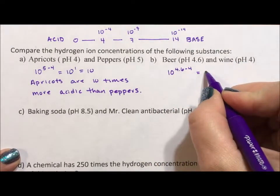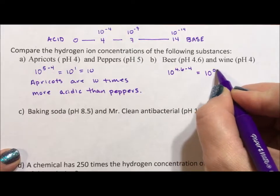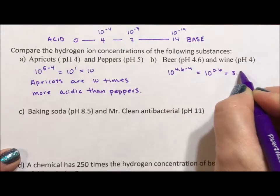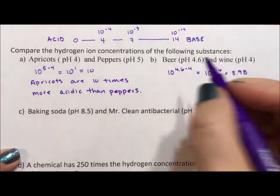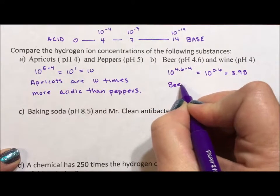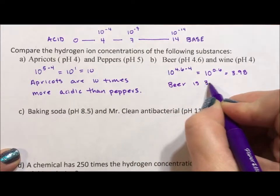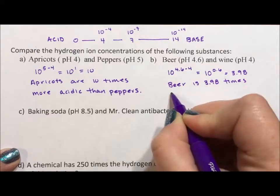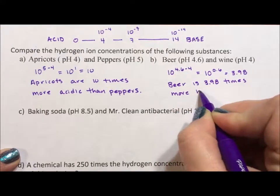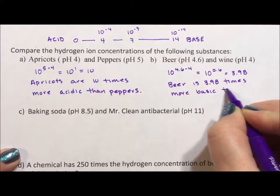So comparing beer and wine I'm going to end up with 10 to the 0.6 which is 3.98 and so I can say because that number is larger closer to 14, beer is 3.98 times more basic than wine.